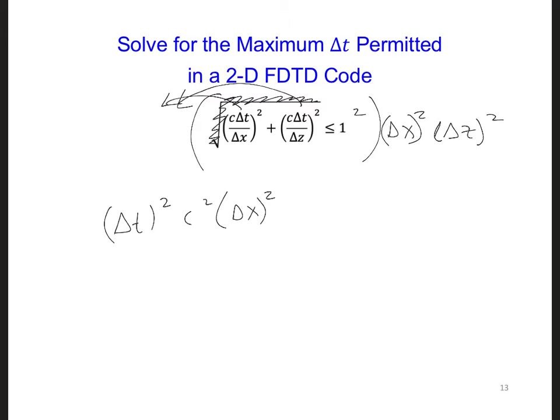plus delta z squared. And that has to be less than delta x squared times delta z squared. Then if we divide the entire equation by c squared delta x squared plus delta z squared,